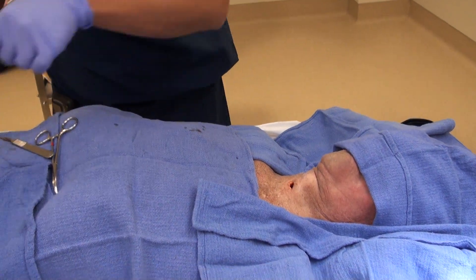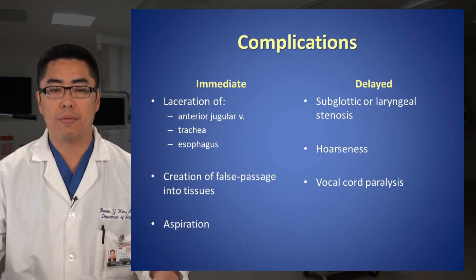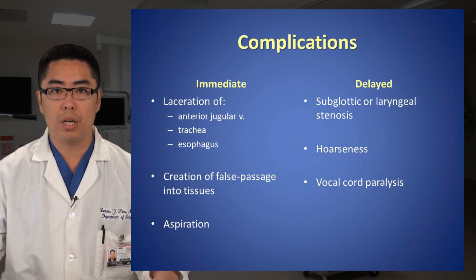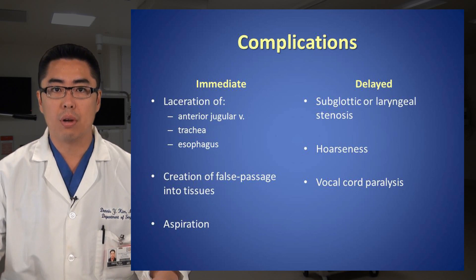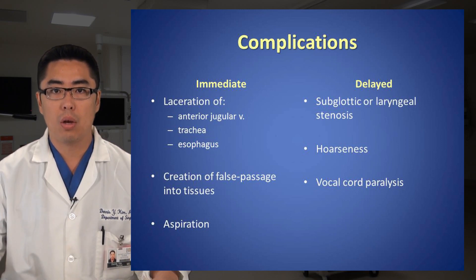Complications of surgical cricothyroidotomy may be classified as immediate or delayed. Immediate complications include iatrogenic injury or laceration of the anterior jugular veins, the trachea, or the esophagus. Creation of a false passage into tissues may delay the procedure and be associated with significant hypoxemic complications. Aspiration is always a possibility with this procedure. Delayed complications include subglottic or laryngeal stenosis, hoarseness, and vocal cord paralysis.